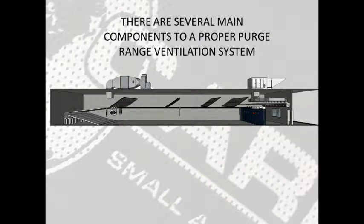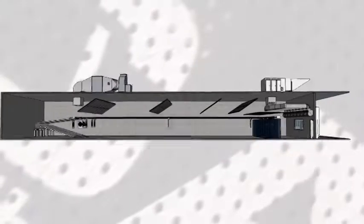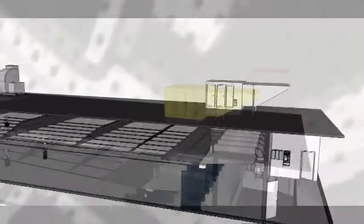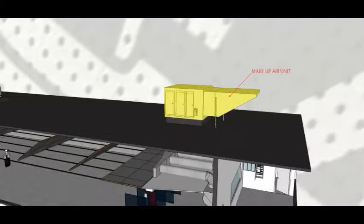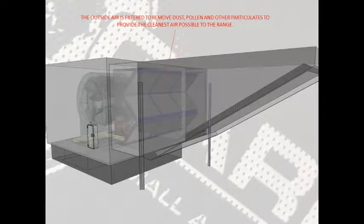There are several main components to a proper purge ventilation system. The makeup air unit. Makeup air filters remove pollen, dust, and other particulates to provide the cleanest air possible to the range.